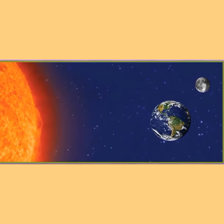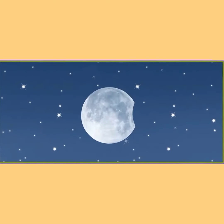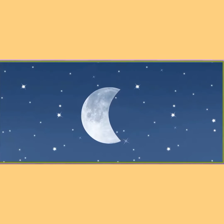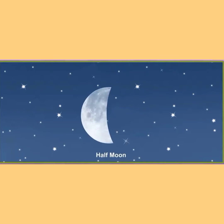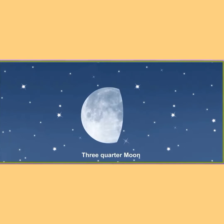The moon does not have its own light — it gets light from the sun. Now, the moon can be seen with different shapes. Many times there is no moon, and that is called a new moon. Next is quarter moon, half moon, and three-quarter moon.